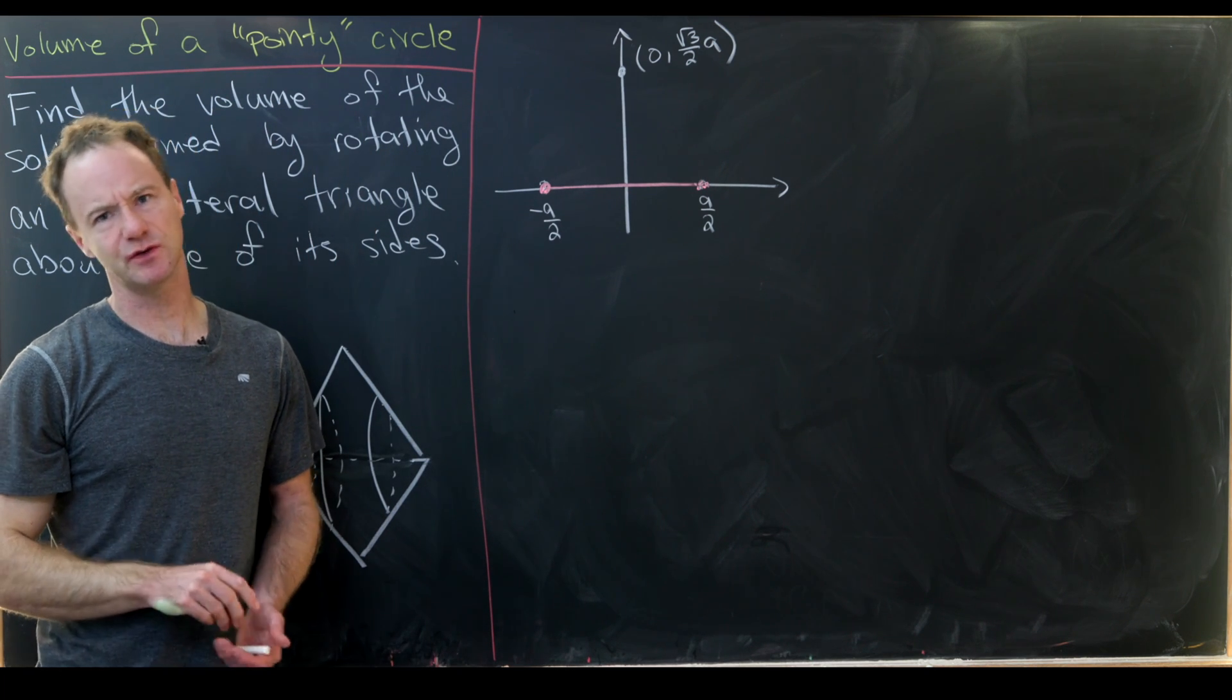But then if I need the side length to be a, that means up here my coordinate needs to be zero comma the square root of three over two times a. And we can gain that just by doing the Pythagorean theorem. So let's connect this.